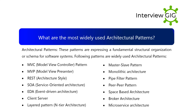What are the most widely used architectural patterns? Architectural patterns express a fundamental structural organization or schema for software systems. Widely used patterns include: MVC (Model-View-Controller), MVP (Model-View-Presenter), REST architecture style, SOA (Service-Oriented Architecture), EDA (Event-Driven Architecture), Client-Server, Layered and N-Tier Architecture, Master-Slave Pattern, Monolithic Architecture, Pipe-Filter Pattern, Peer-to-Peer Pattern, Space-Based Architecture, Broker Architecture, and Microservice Architecture.